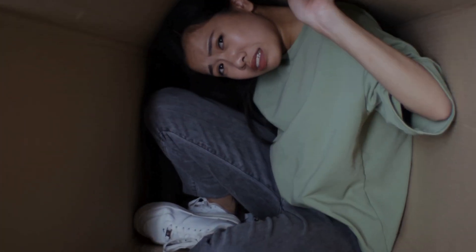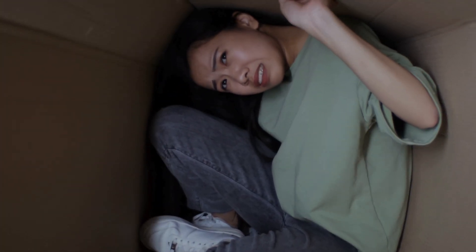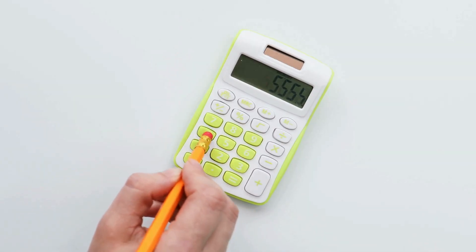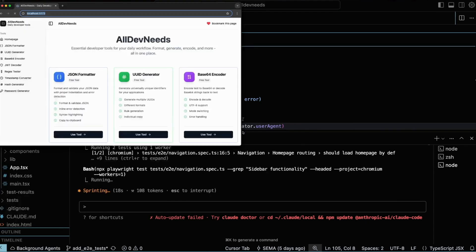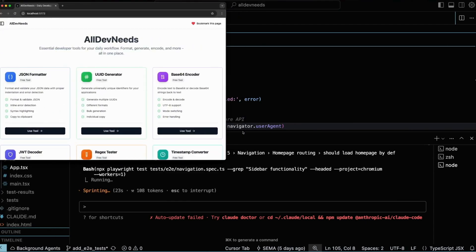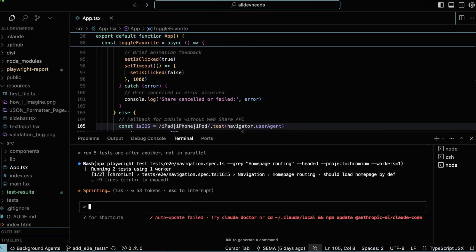Now you might be thinking, wait, I'm on subscription, I'm not paying by the token. And you are right, technically. But here's the catch. Those subscriptions are still limited by token usage. Each plan gives you a certain amount of usage over a time interval. So if you are not being billed per prompt, you are absolutely being capped. And once you hit that limit, you'll see this message.